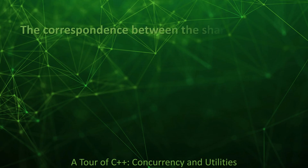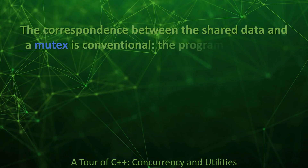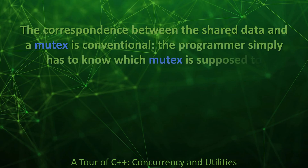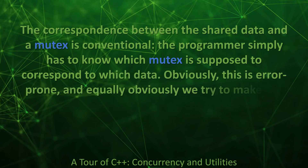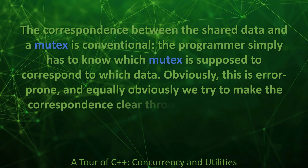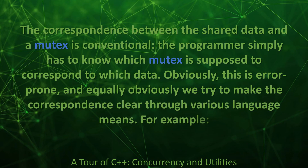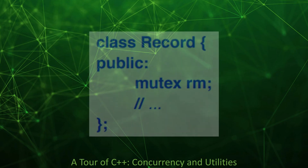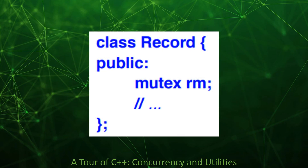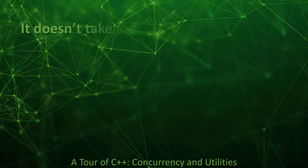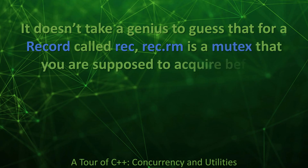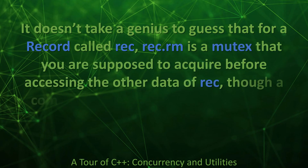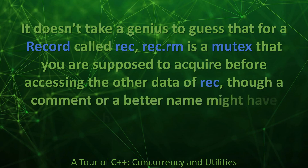The correspondence between the shared data and a mutex is conventional — the programmer simply has to know which mutex is supposed to correspond to which data. Obviously, this is error-prone, and equally obviously, we try to make the correspondence clear through various language means. For example, it doesn't take a genius to guess that for a record called rec, rec.rm is a mutex you are supposed to acquire before accessing the other data of rec, though a comment or a better name might have helped a reader.